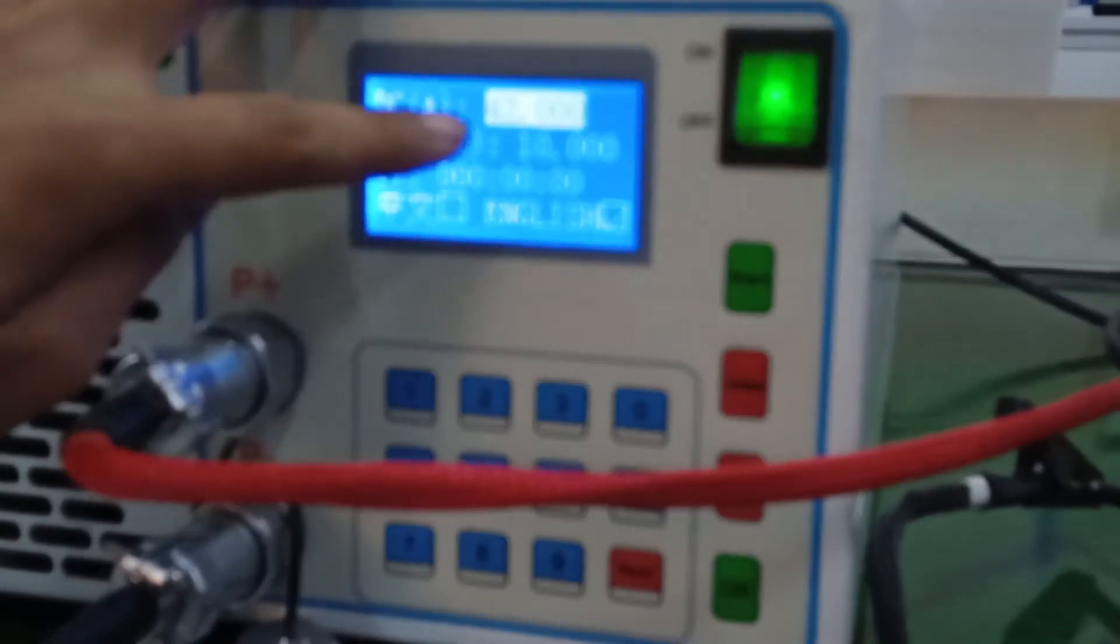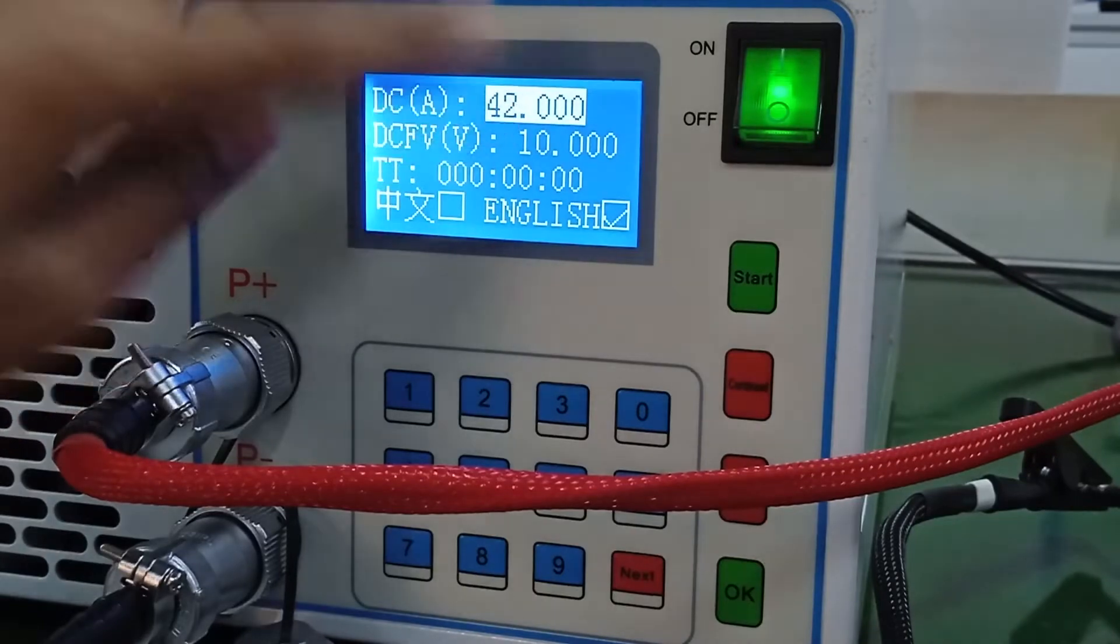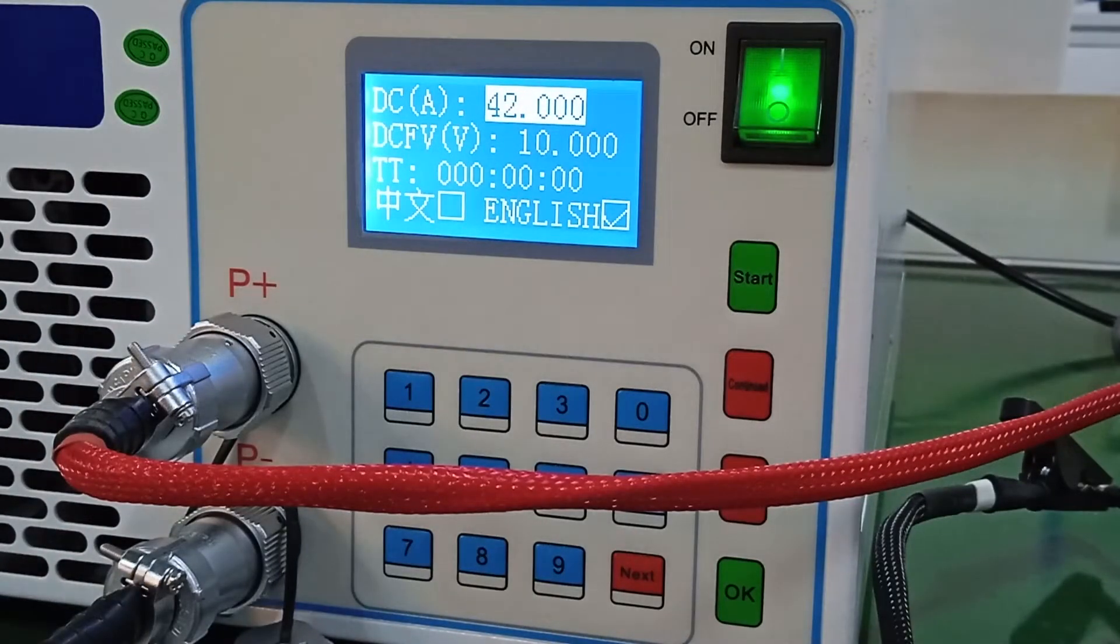At that time, we have set it at 42 amps. The maximum DC current that you can set is 50 amps. This system is permissible up to 50 amps.